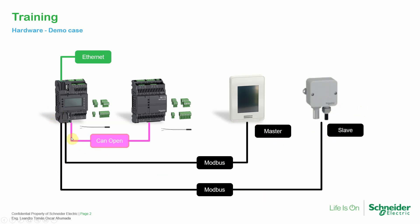Then we have the other port of the PLC communicating to the M172D. In this case the display is the master. We also have the expansion module over CAN to communicate with the PLC, and we already saw in a previous module the web server of the PLC.